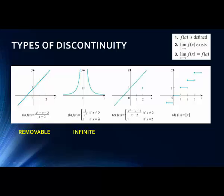Here we have infinite discontinuity because we have asymptotes. As we're getting closer and closer to 0, the function is going either to positive infinity or negative infinity.